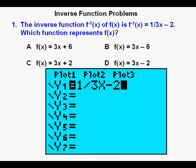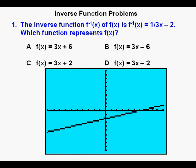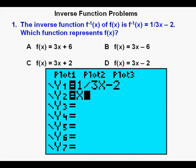First place y = (1/3)x - 2 in y1. Graph the function. If the graph looks weird, you might try the standard window, which you can get by pressing zoom, then six. Next we go back to enter y = x in y2. Graph the two functions together.